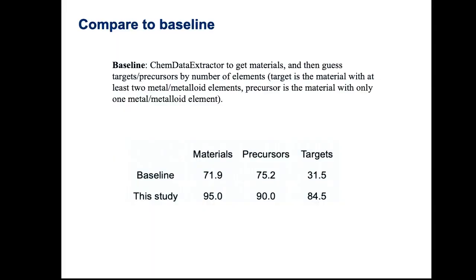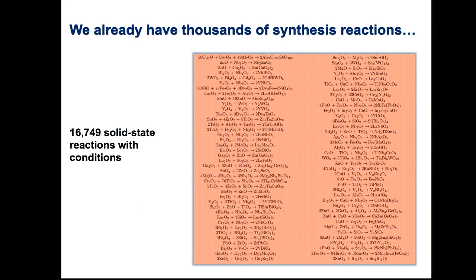This is good, but not amazing. Think about it: a synthesis recipe has like 10 things in it. If I have a 10% error on one of them, I don't end up with a lot of correct synthesis recipes. So I need to do really well on my extraction. Compared to just using chem data extractor as a baseline, our method has much better extraction for materials and precursors. In particular, chem data extractor really cannot distinguish a target of synthesis from a precursor.